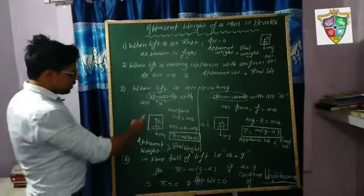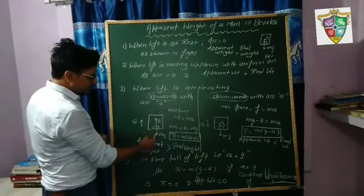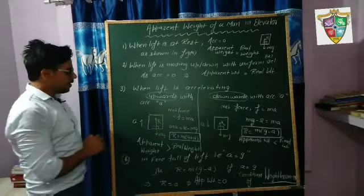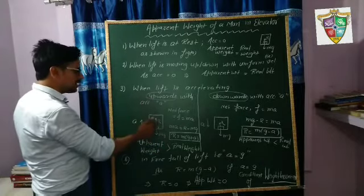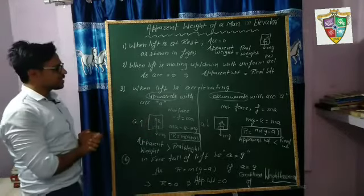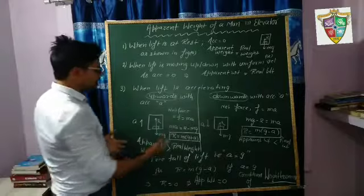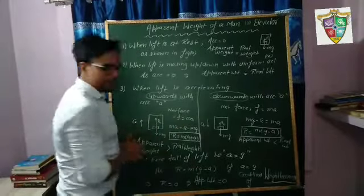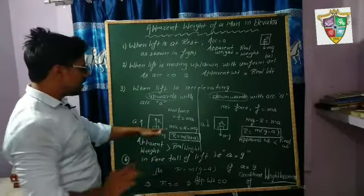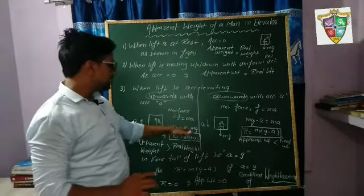Now this is the case in which weight of the body exists downward and this is balanced by this normal reaction R and lift is accelerating upwards with acceleration A. So net force on the object is F is equal to MA.